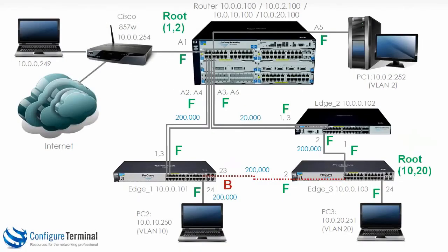So now let's make the router the root for VLANs 1 and 2, and edge 3 the root for VLANs 10 and 20. Best practice would say that your core switches should be the root of your spanning tree topology, and if you don't have core switches then your distribution switches should be the root. I'm changing it here just to show you what happens when we change the roots of a spanning tree topology — this is not best practice.